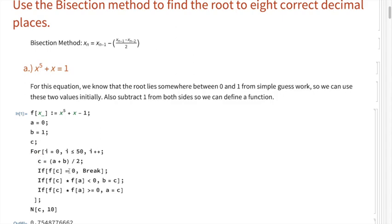Entering the for loop, we first set c equal to the midpoint of a and b. In this first case, the midpoint is 0.5. Next we run three simple checks. First, does f(c) equal zero? If it does, we break. This condition checks that we're not encountering any problems, and if we are, we automatically break out of the loop because we don't want to continue the computation any further.